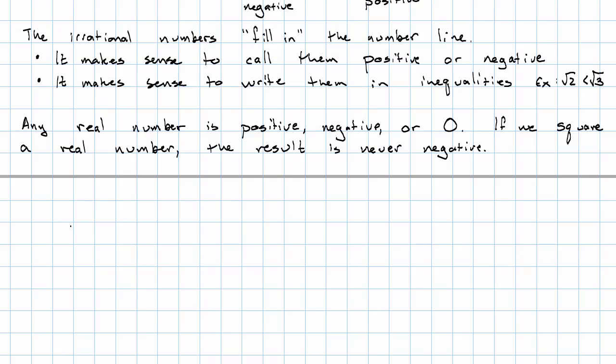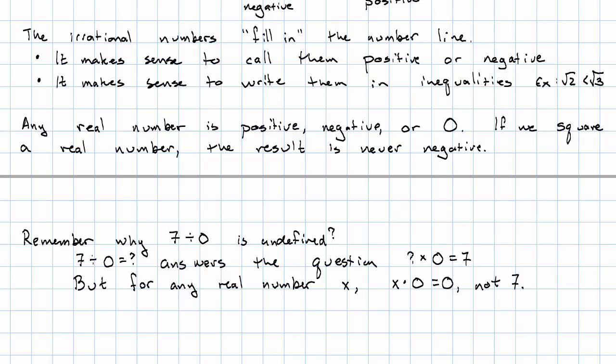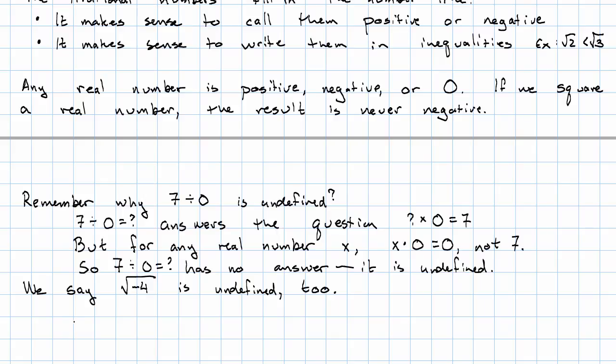Okay, where am I going with this? Do you remember why 7 divided by 0 was undefined? Well, 7 divided by 0 equals what answers the question, what times 0 equals 7? But it turns out that for any real number x, x times 0 is 0, not 7 at all. So 7 divided by 0 doesn't have any answer. 7 divided by 0 is undefined.